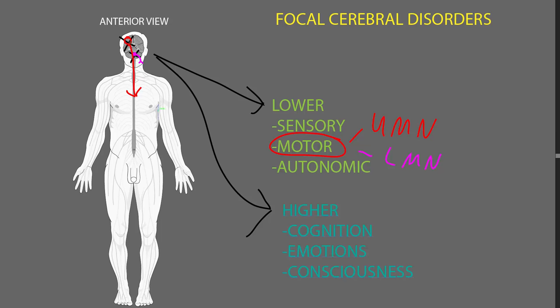For example, a lesion of the right side of the cerebrum will often lead to upper motor neuron abnormalities on the contralateral side — the left side of the body — because most of these upper motor neurons cross from one side to the other in the central nervous system. The same is true for a few of the senses, in particular somatosensation and vision.